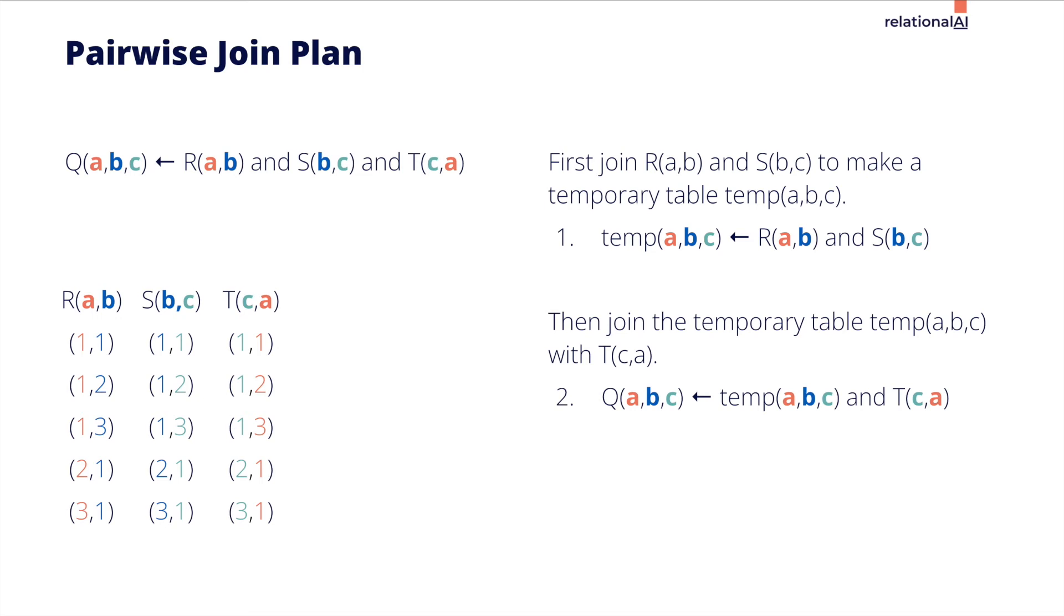A traditional database begins processing this data by first joining tables R and S to create a temp table. Then it joins the temp table with T to find the answer.